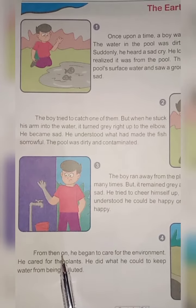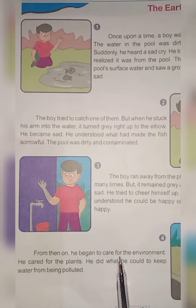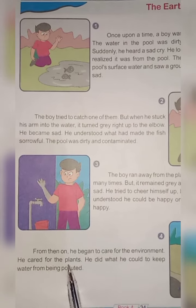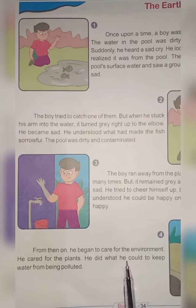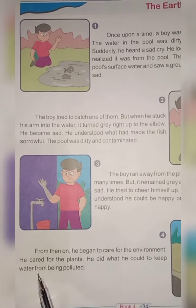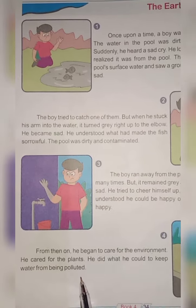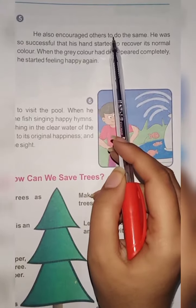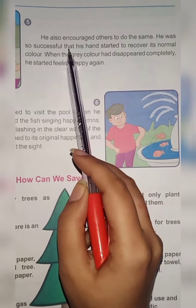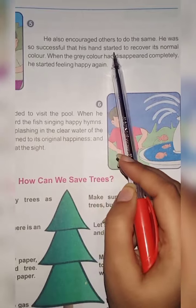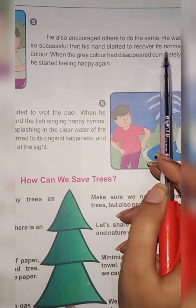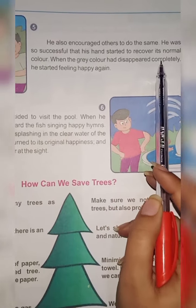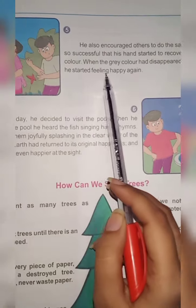From then on, he began to care for the environment. He cared for the plants and did what he could to keep water from being polluted. He also encouraged others to do the same. He was so successful that his hand started to recover its normal color.